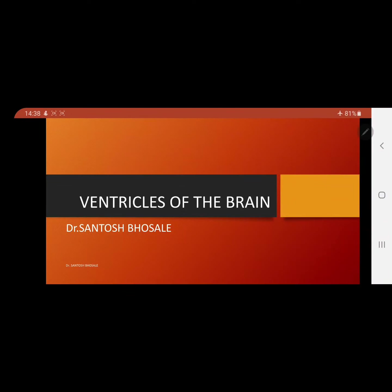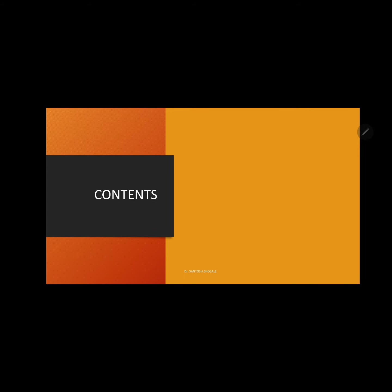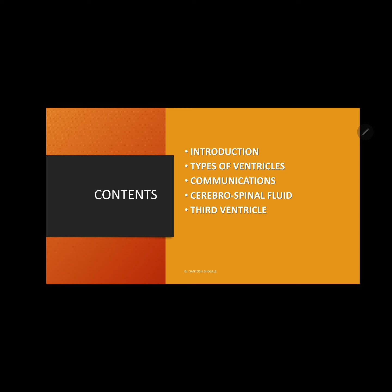Hello friends, welcome to my channel. Today in this session we are going to discuss ventricles of the brain, that is the ventricular system. We will discuss what the ventricular system is, the different types of ventricles, how they communicate with each other, cerebrospinal fluid — its composition and function, how it flows through the CNS — and we will see the third ventricle in detail.